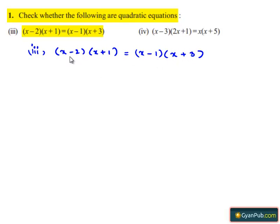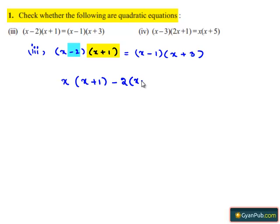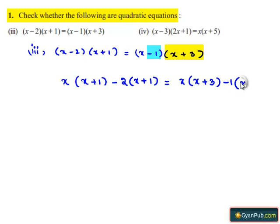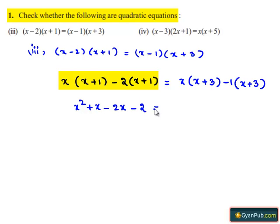On the left hand side, we have x minus 2 times of x plus 1. This can be written as x multiplied by x plus 1 minus 2 multiplied by x plus 1. And on the right hand side, we have x minus 1 times of x plus 3. This can be written as x times of x plus 3 minus 1 times of x plus 3.